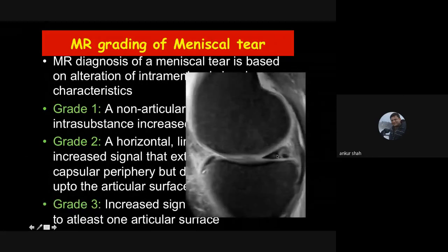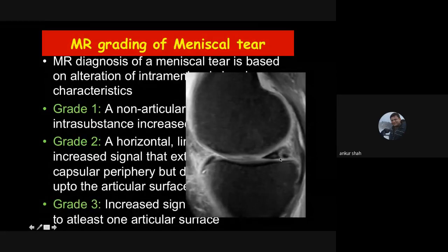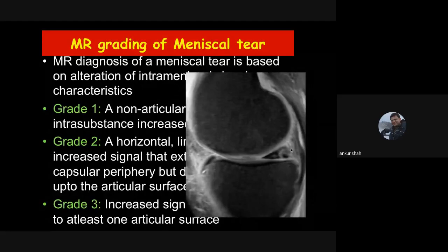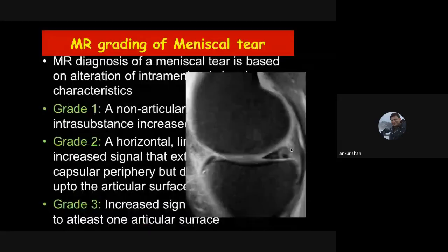We term it a tear only when it is grade three — when the hyperintensity reaches up to any one of the articular margins or the free edge, because then it will be seen on arthroscopy. This hyperintensity reaching up to the tibial articular margin is the appearance of a grade three meniscal tear. An exception: if grade two signal is associated with a parameniscal cyst, it can be termed a grade two tear. Otherwise, grade three is when we call it a meniscal tear.